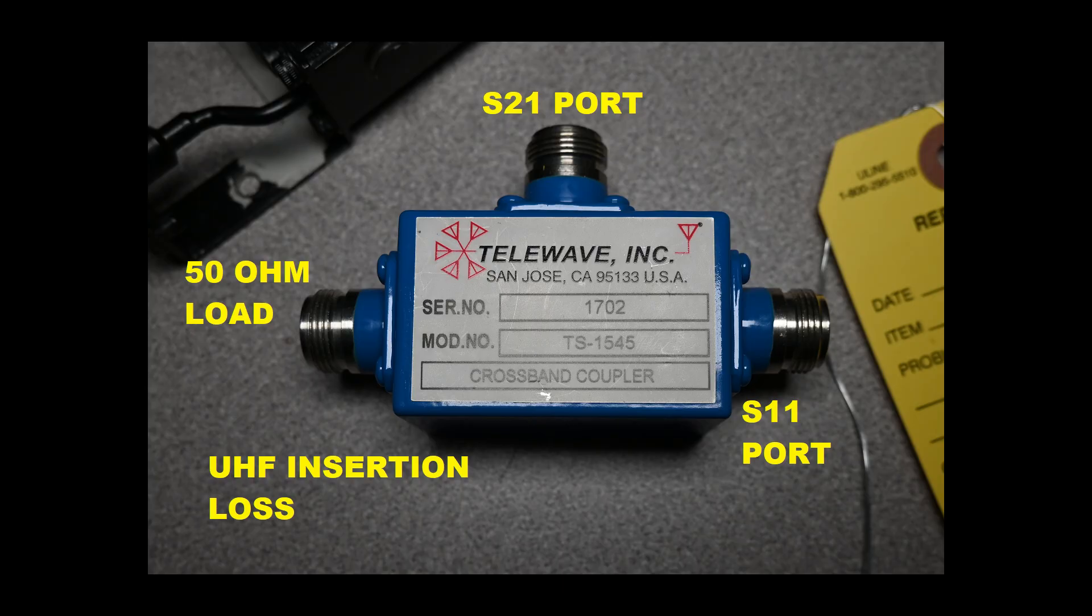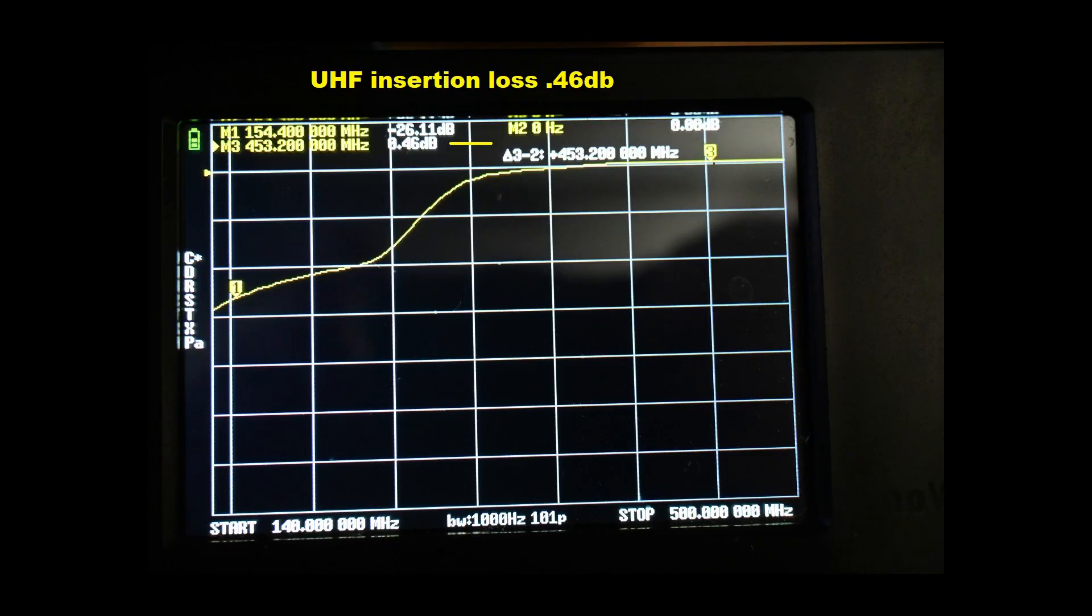Now we will reverse our connections at the transmitter ports for the UHF test. The S21 cable stays on the antenna port. Our UHF insertion loss measurement is 0.46 dB and Marker 1 should represent our isolation.